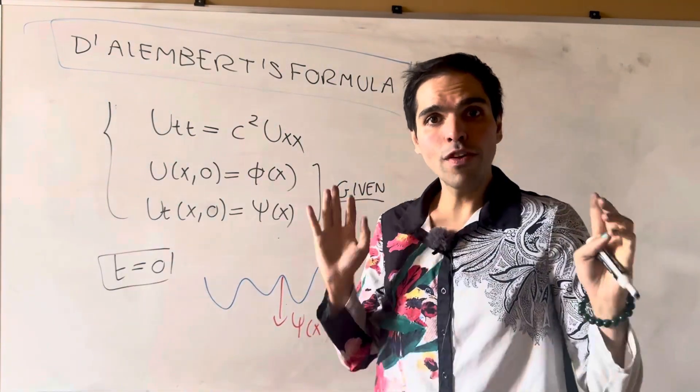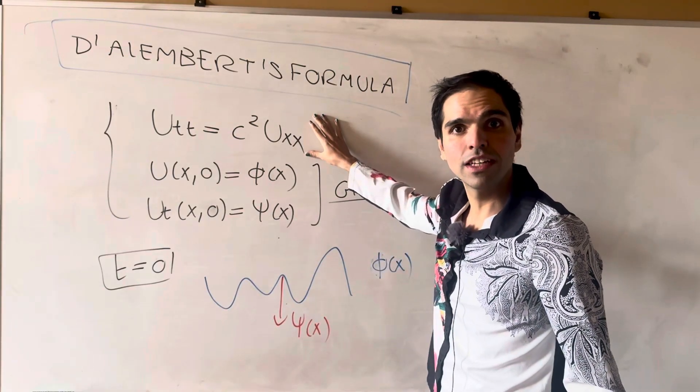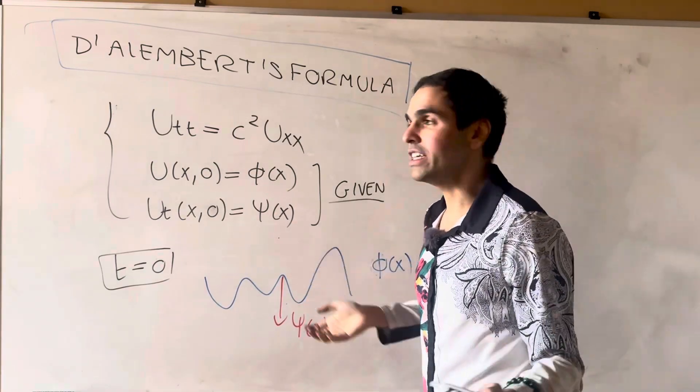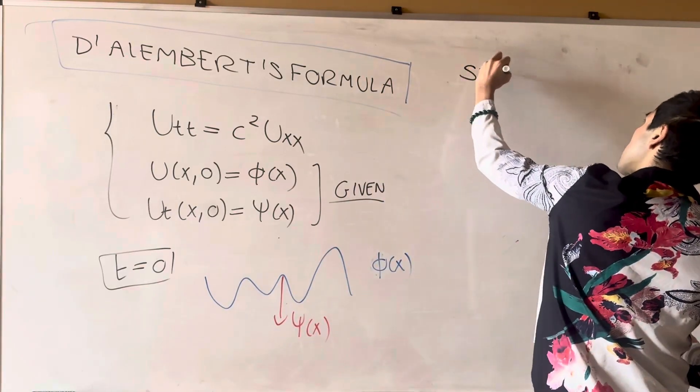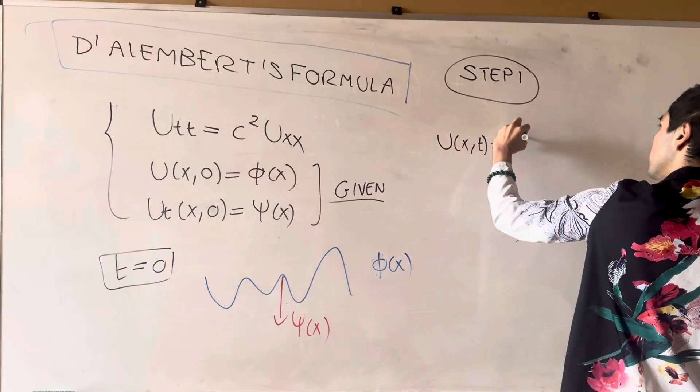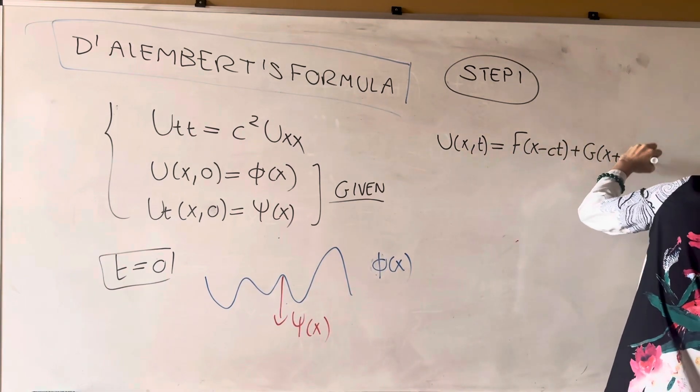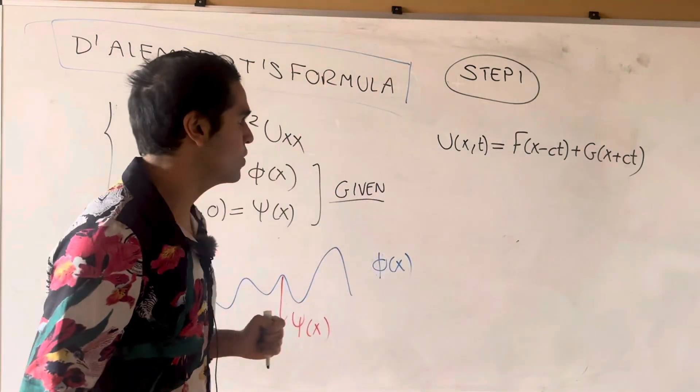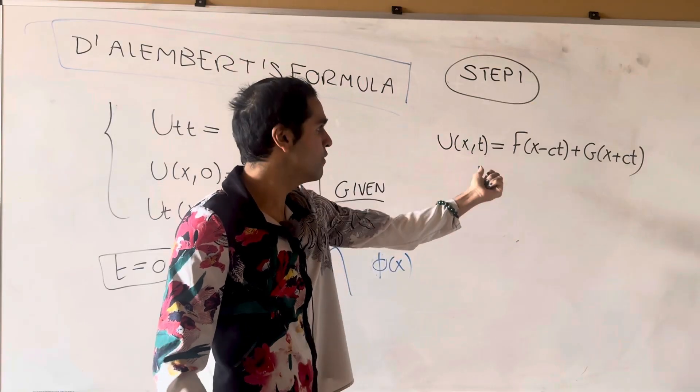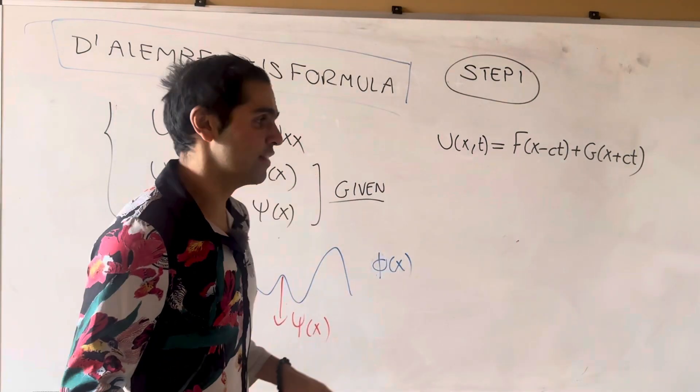Now, the good news is, we've already done the hard work, because we've already found a general solution of this. So the rest is just a matter of plugging in our initial conditions, just like for ODEs. So, step one. What we know is that u of x,t is f of x minus ct plus g of x plus ct. It essentially says that any wave splits up into two, one moving to the right at speed c, and one moving to the left at speed c.